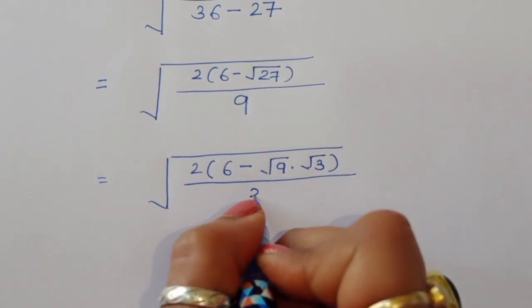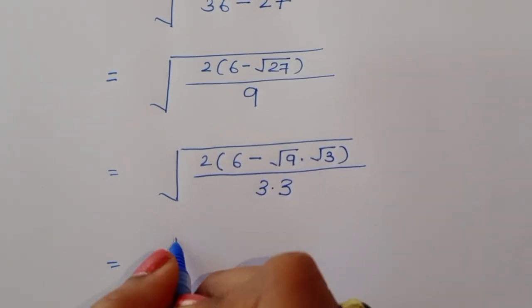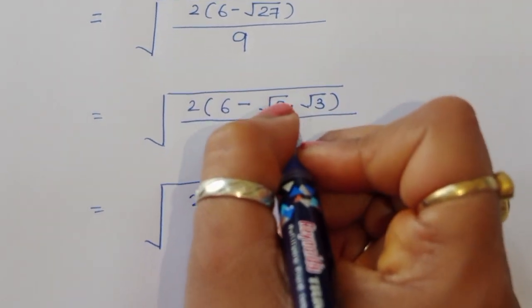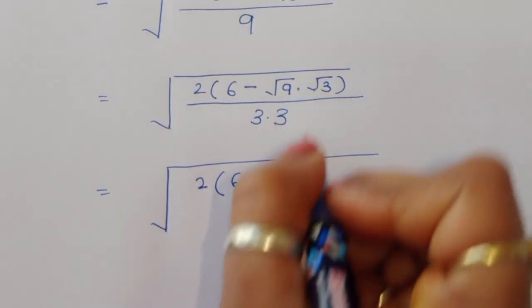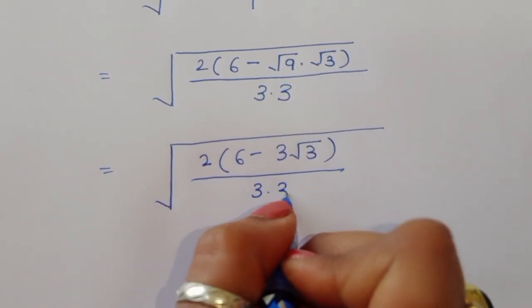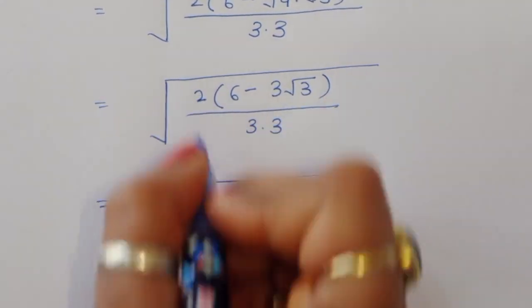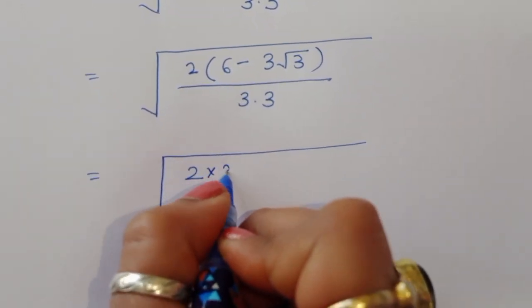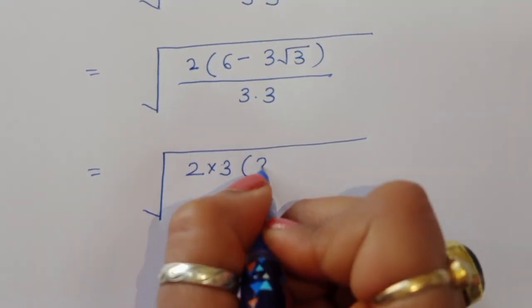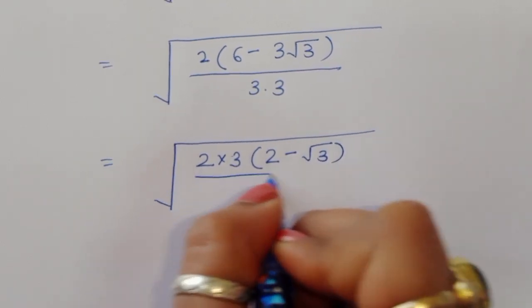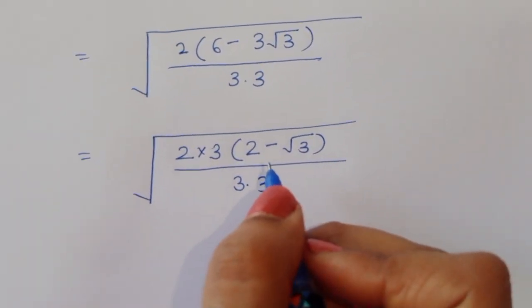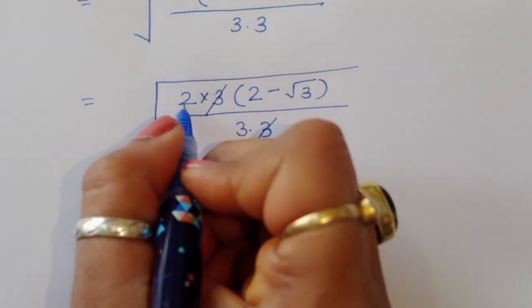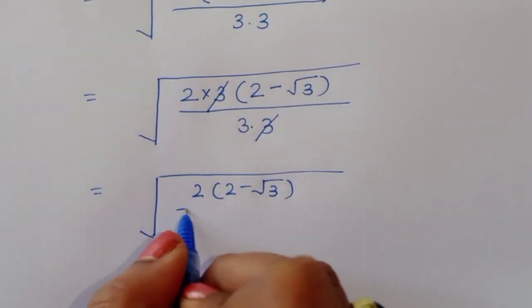So we have 2 times (6 minus 3 square root of 3) divided by 9. We can write 9 as 3 times 3. Taking 3 as common from the numerator: 2 times 3 times (2 minus square root of 3) divided by 3 times 3. Canceling 3 from numerator and denominator gives 2 times (2 minus square root of 3) divided by 3.